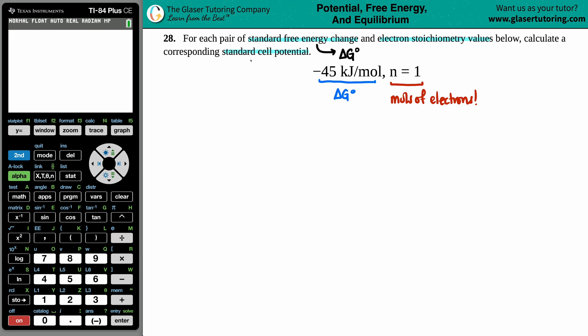If we're trying to solve for a standard cell potential, cell potential is always E cell. And since it's standard, I've got to see that little naught in the upper corner. What's the formula that links E cell with delta G and the number of electrons? If we're solving for E cell, it's pretty easy to just memorize it as negative delta G over nF.